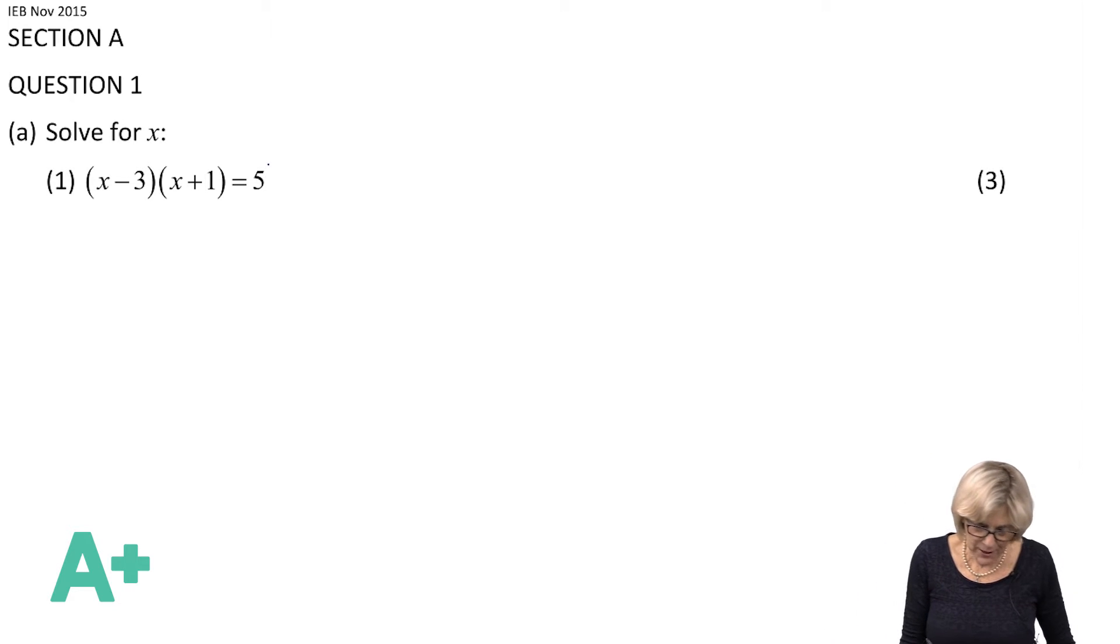Now because it's not equated to 0, we're going to have to multiply out. So multiplying out, you're all familiar with that. So we're going to get -3x plus x and -3 equals 5.